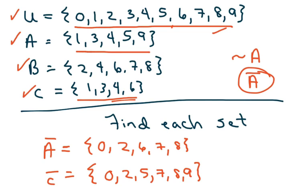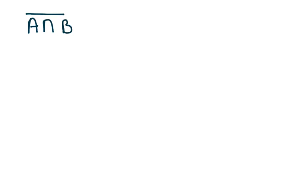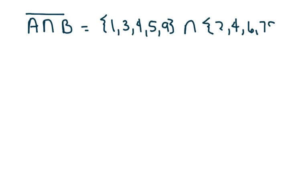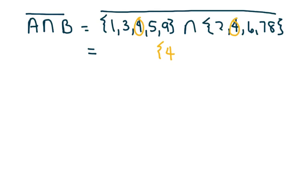The next one we're going to do is A intersect B, and we want the complement of that. First I'm going to write down A and intersect it with B. The only element common to both is 4, so A∩B = {4}. Then I take the complement — everything in the universal set that's not 4 — so that would be 0, 1, 2, 3, 5, 6, 7, 8, and 9.